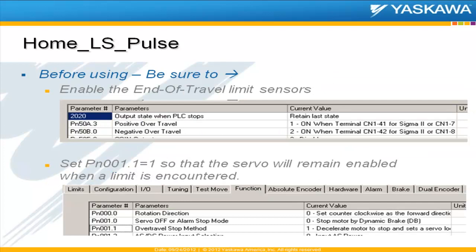Before using this function block, be sure to first enable your end-of-travel limit sensors, and then second, it's highly recommended you set parameter 1.1 equal to 1. It will default to 0, which means that when you hit an end-of-travel limit, the axis will disable itself in that direction. Setting it to 1 will decelerate the motor to a stop and set a servo lock condition — basically, just keep it enabled.